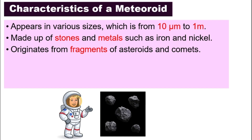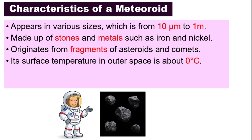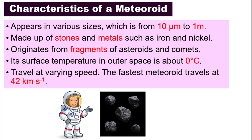Why are meteoroids so small? Because meteoroids actually come from asteroids and comets — they are the fragments from asteroids and comets, so we can say they are debris. Their surface temperature in outer space is about 0 degrees Celsius, and they travel at different speeds. The fastest ones can travel at about 42 kilometers per second — in just one second, they can travel as far as 42 kilometers. That is pretty impressive!